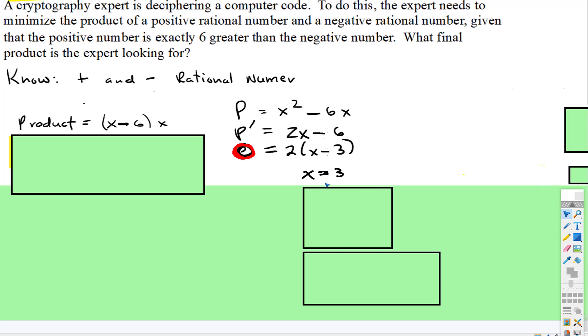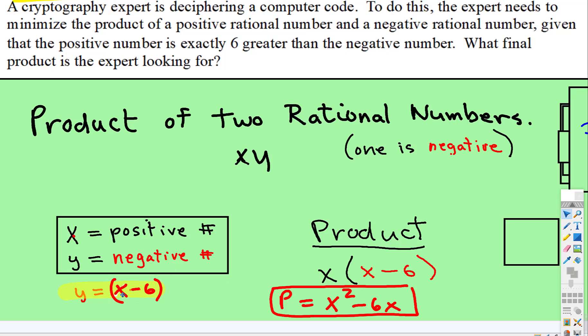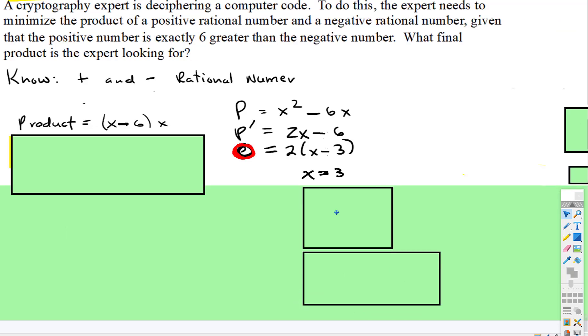Right, so if x is equal to three, well, remember what y is: y is x - 6. So 3 - 6, y will be negative 3. So we have x is 3, y is negative 3.